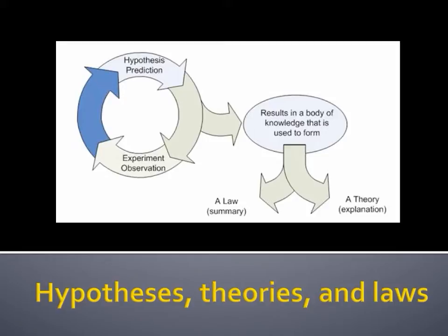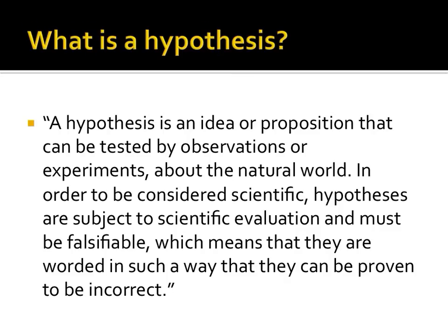The graphic on this slide simplifies how scientific hypotheses, theories, and laws all fit together. In the unit on the scientific method, we discussed hypotheses. In review, a hypothesis is an idea, proposition, or expectation as to what you imagine will happen in an experiment. Anyone can — and you have — made numerous hypotheses in science classes. One key component to a hypothesis is that they must be falsifiable, or they must be able to be proven wrong. You don't prove a hypothesis right, but you can support your hypothesis with data.